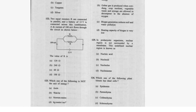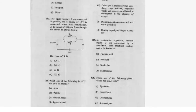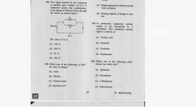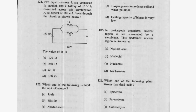Question 113: Two equal transistors are connected in parallel with a battery of 12 volts, and a current of 100 mA flows through the circuit. On calculation, option B is correct — 240 ohms.